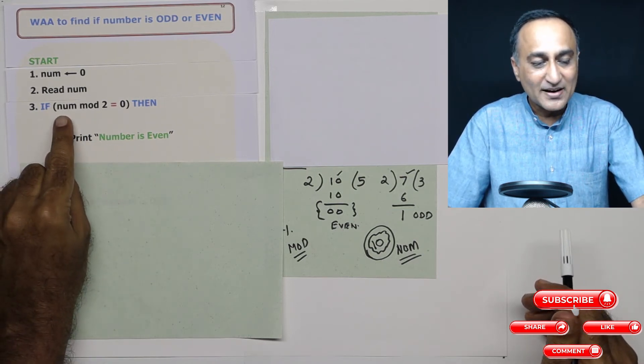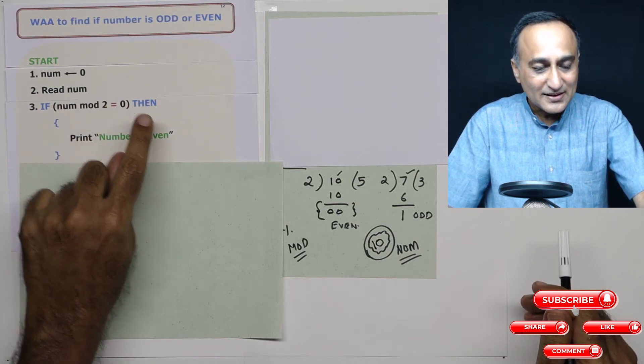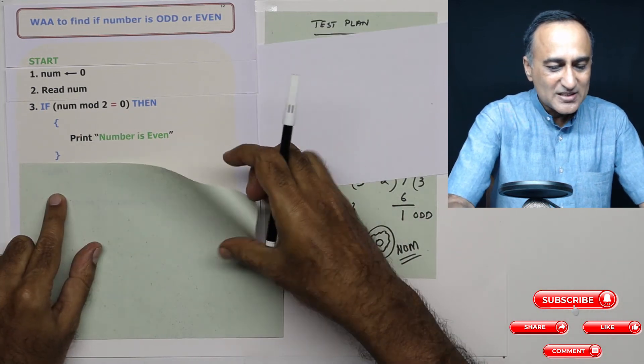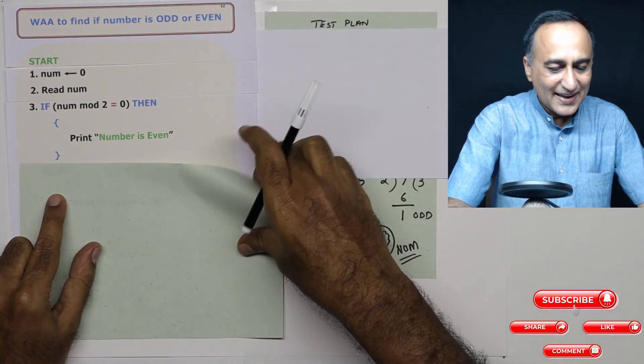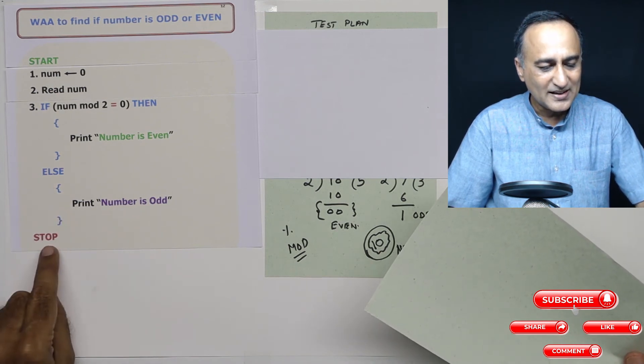But suppose I enter the number 11, 11 mod two is definitely not zero. Then this part is false. So what I do is, I come to the else part. In the else part, I print number is odd. And then I stop.